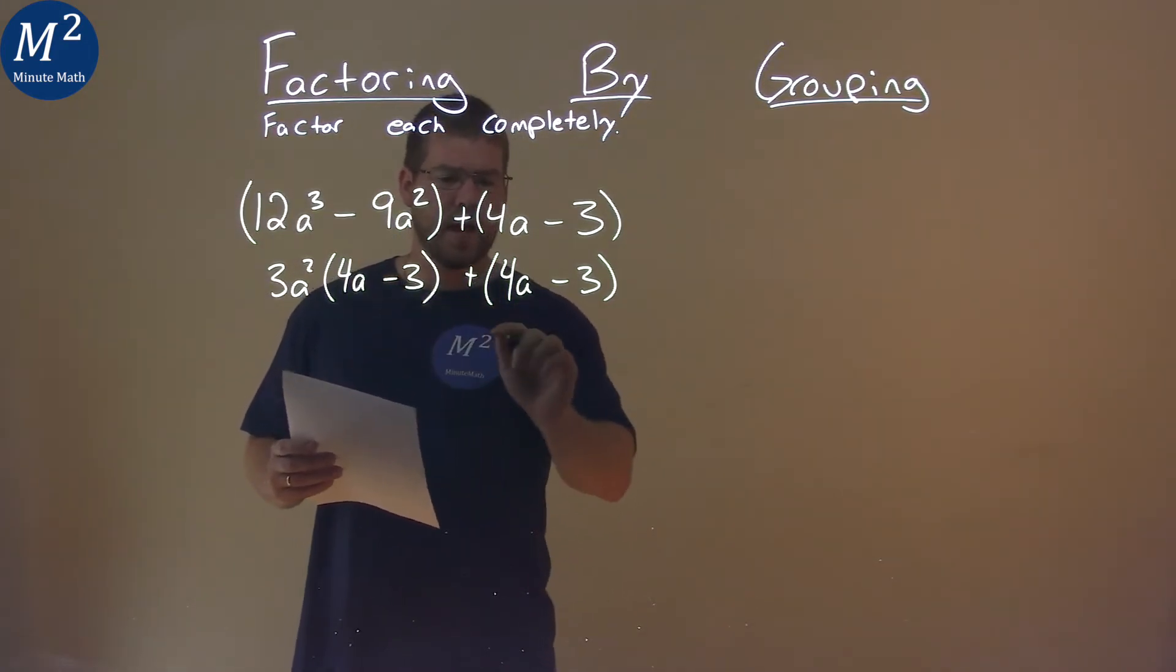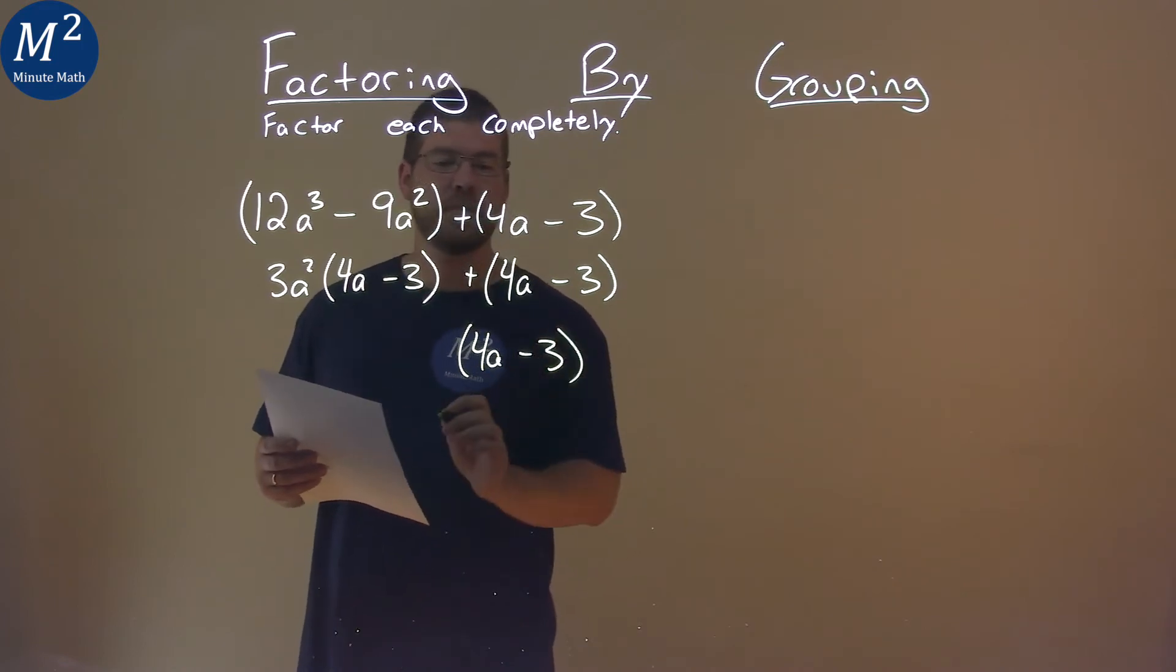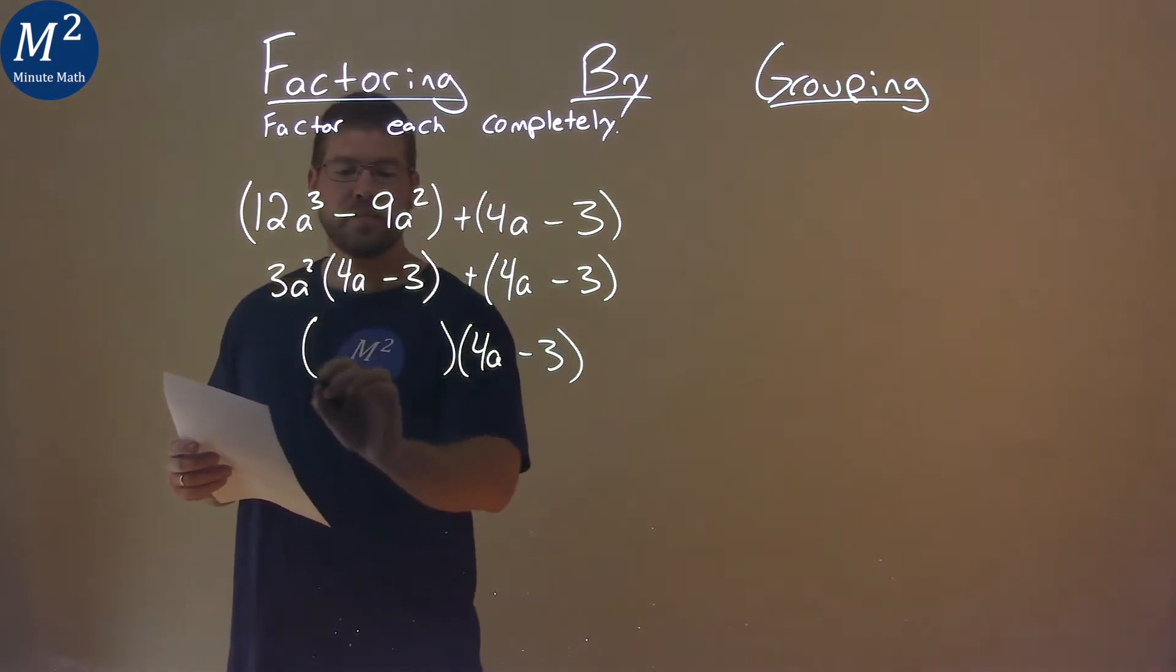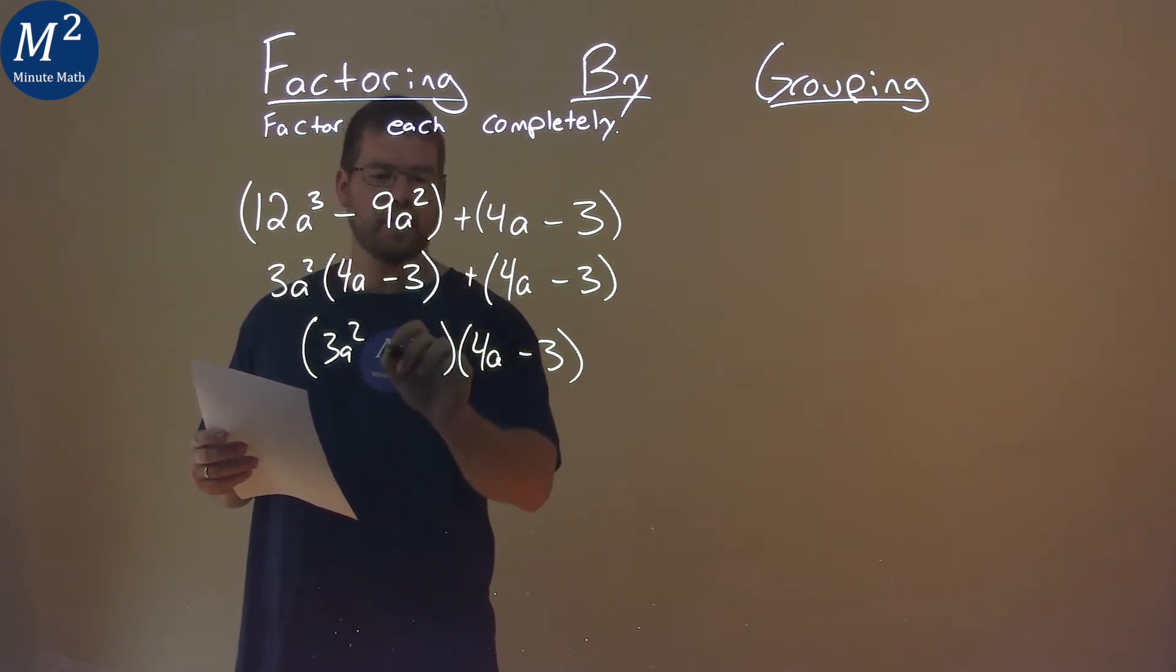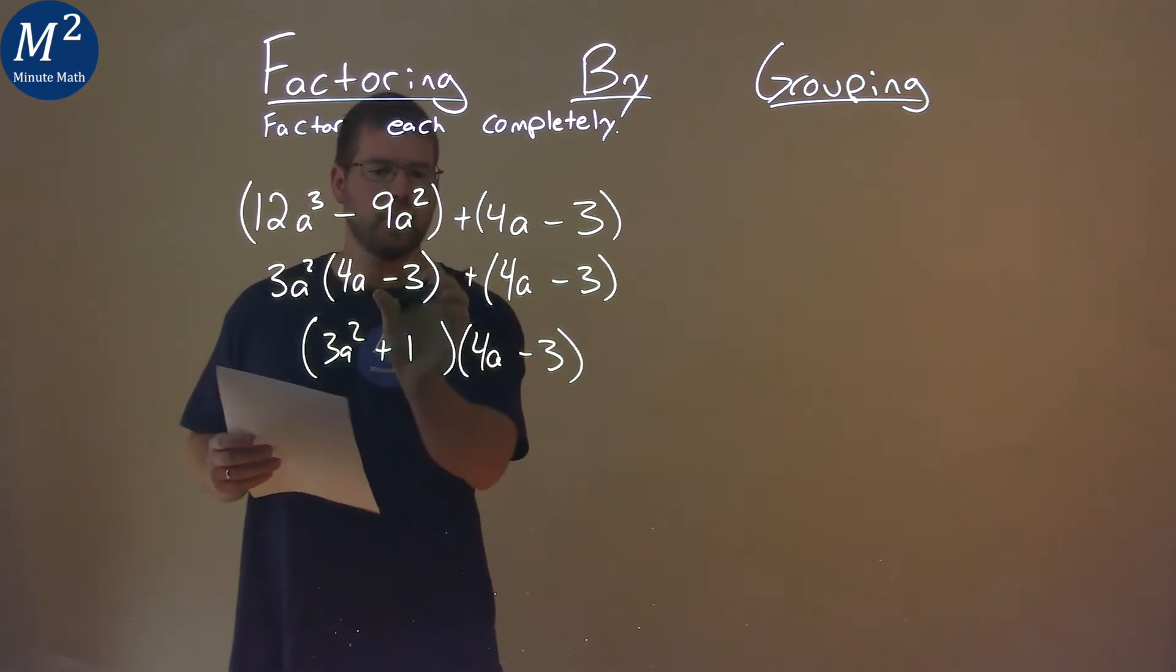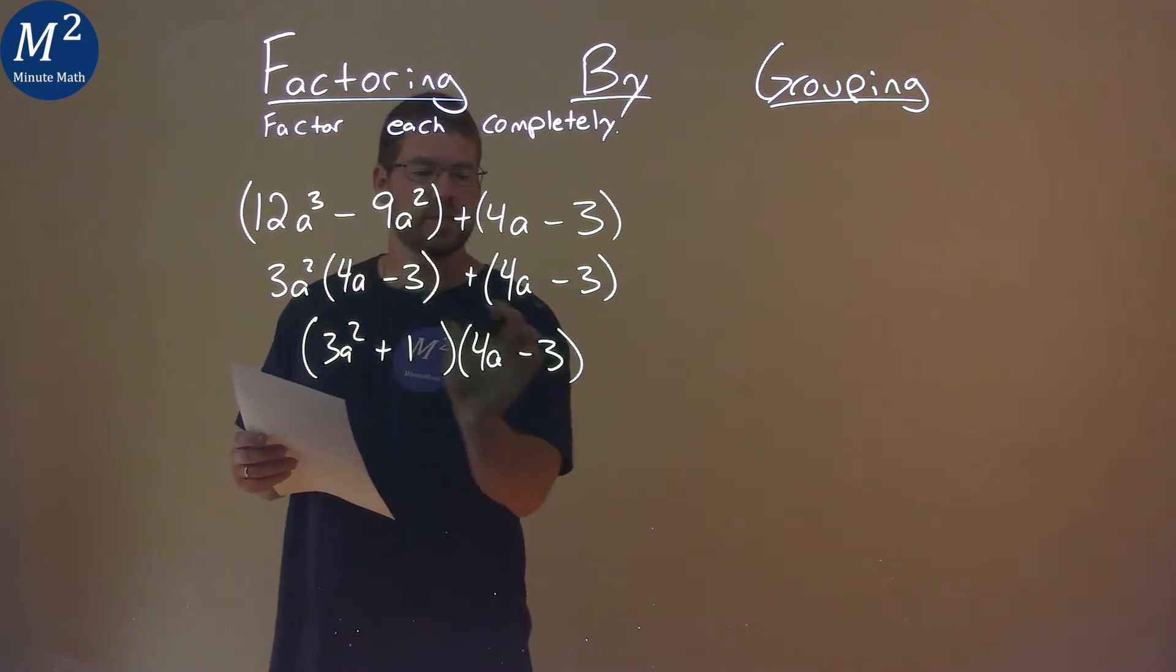So, if I pull out that 4a minus 3 here, well, what's left being multiplied? The 3a squared, and then that plus 1. So, again, we're pulling out that 4a minus 3, goes right here.